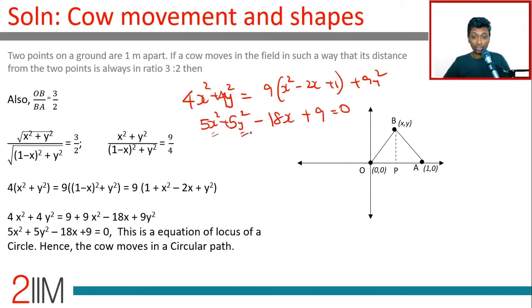x square and y square coefficients are same, that means it's got to be a circle. How circle? Think about it. This is x square plus y square minus 18 by 5x plus 9 equal to 0.